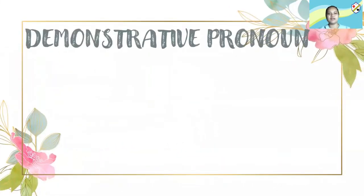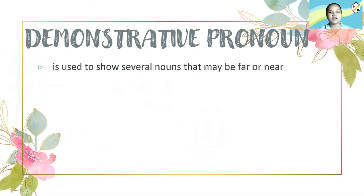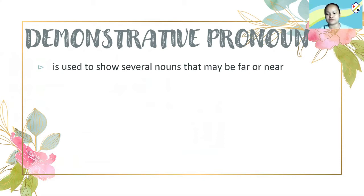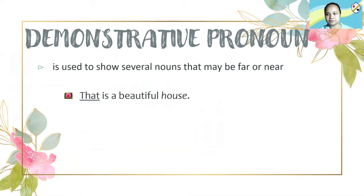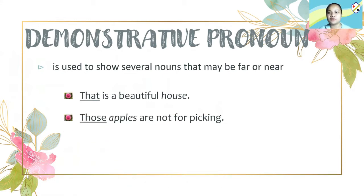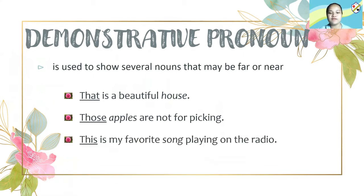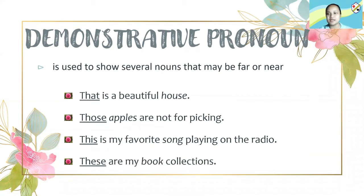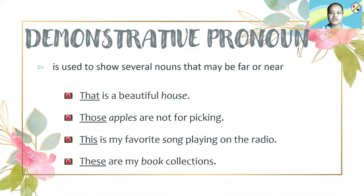And lastly, we have demonstrative pronoun. When we say demonstrative pronoun, it is used to point to several nouns that may be far or near. For example: That is a beautiful house. Those apples are not for picking. This is my favorite song playing on the radio. These are my book collections. When we use 'that' and 'those,' these are objects that are far away. When we use 'this' and 'these,' these are objects that are very near. When we use 'that' and 'this,' they refer to singular objects. When we use 'those' and 'these,' they refer to plural objects.